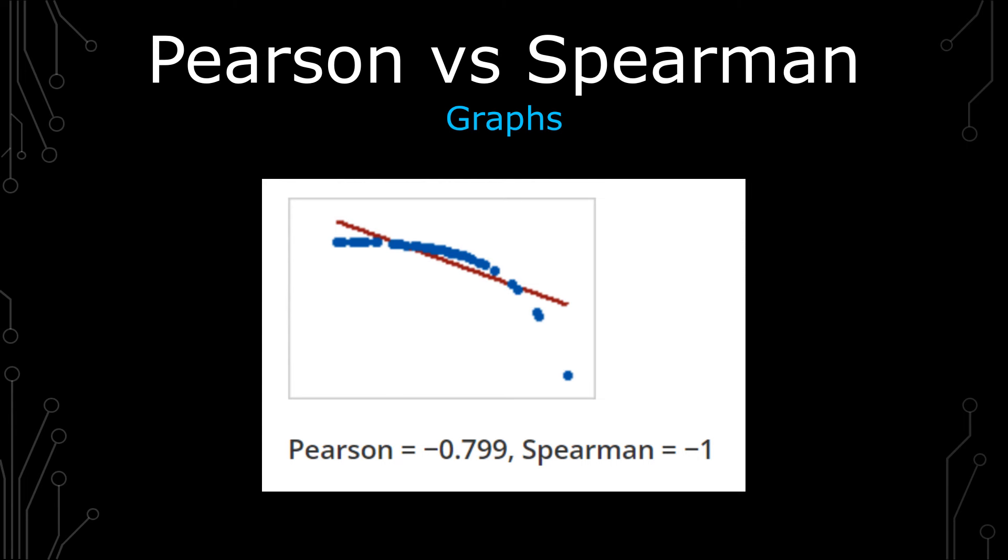Whereas Spearman, because it's always going down, as one of the variables increases, the other variable always decreases. And so because of that, the Spearman is negative one.